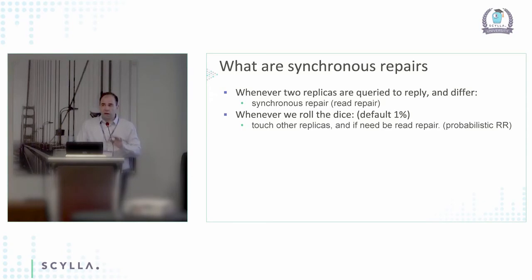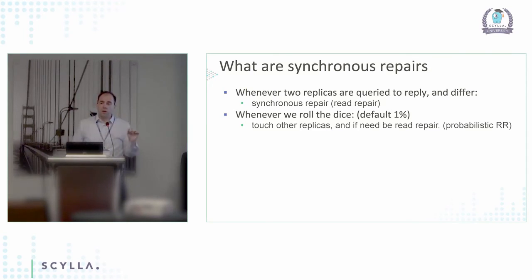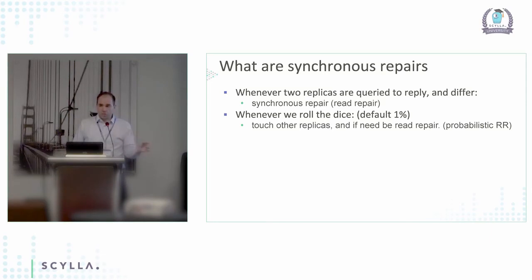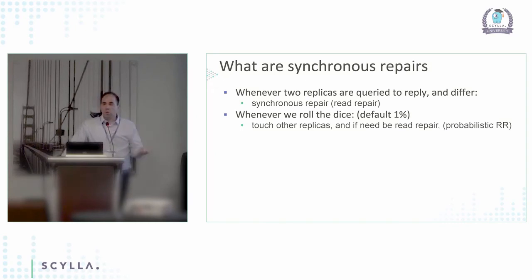There are three types of repair. The first is synchronous read repair, which happens at read time. That's why, by the way, if you read and write with quorum you always have the most up-to-date data — because during a read, if I contact two replicas and notice a mismatch between them, I fix it and then return the result. Synchronous repair happens synchronously in the read path, so even if you hit a node that has the data and one that doesn't, they will both have the data after synchronous read repair fixes it.